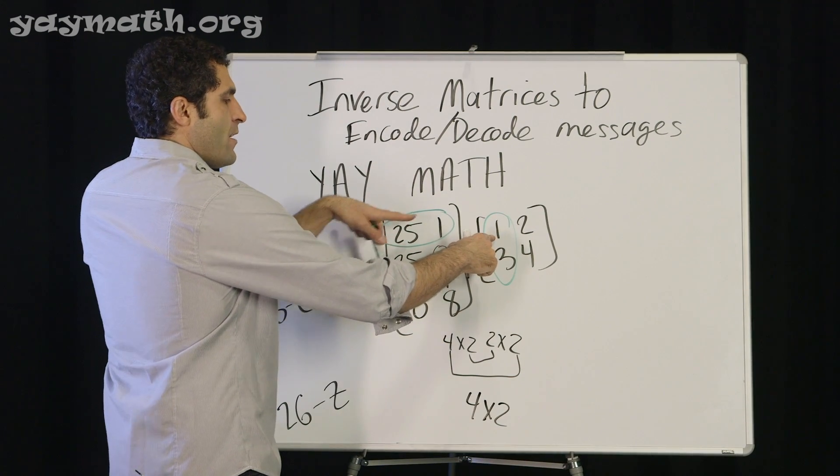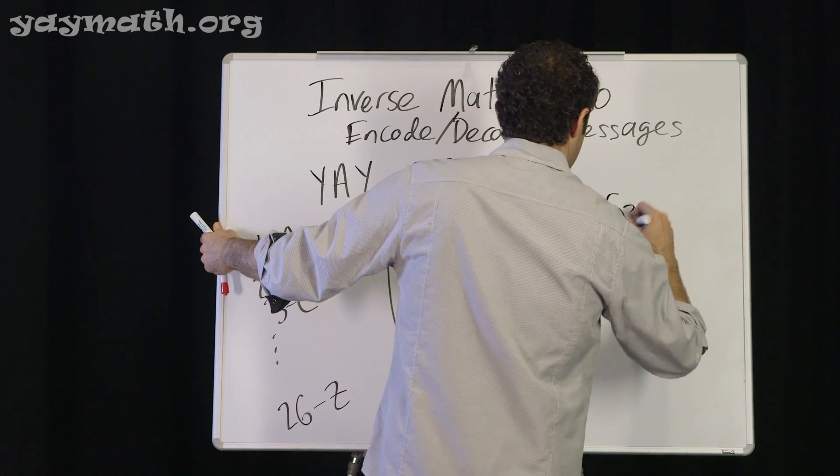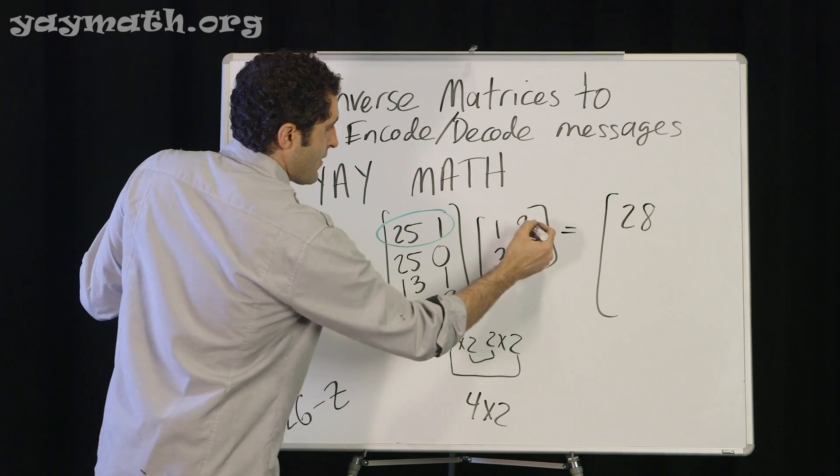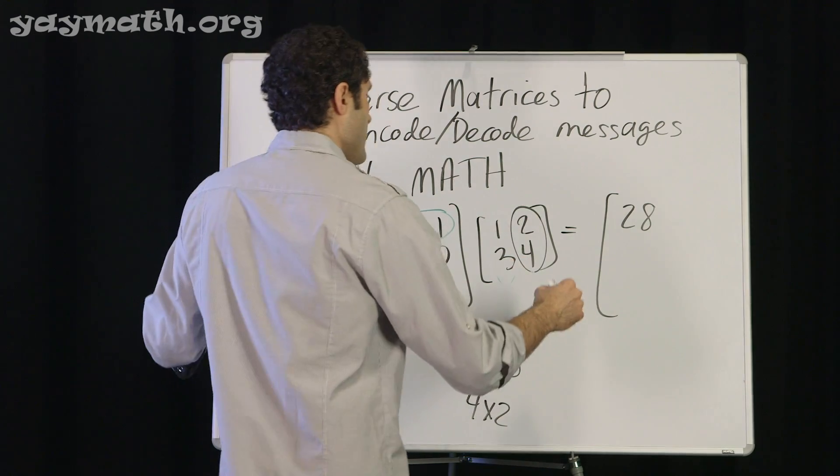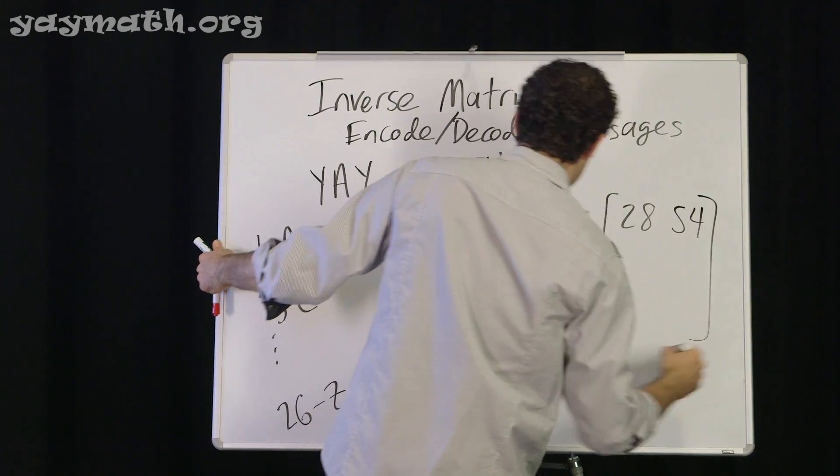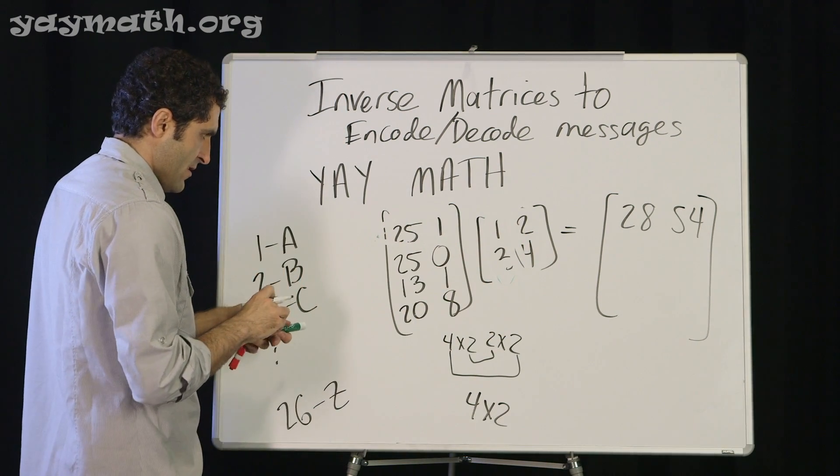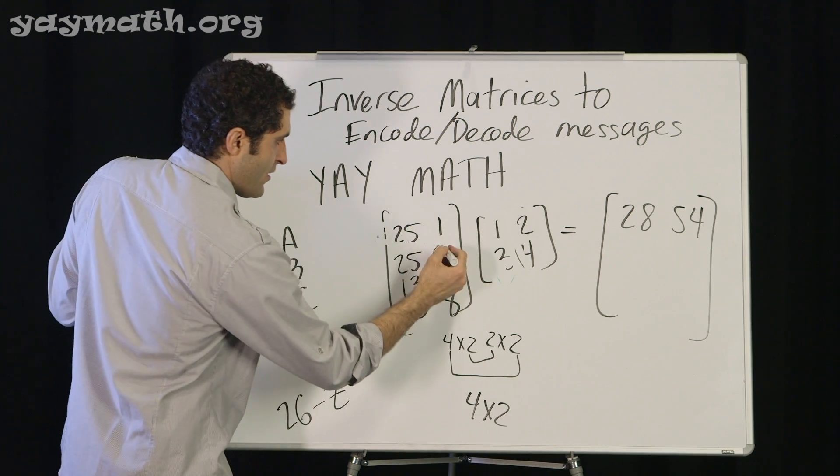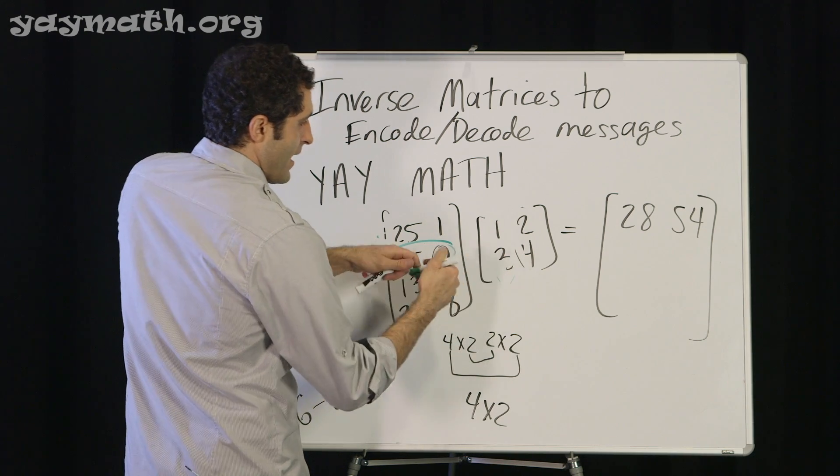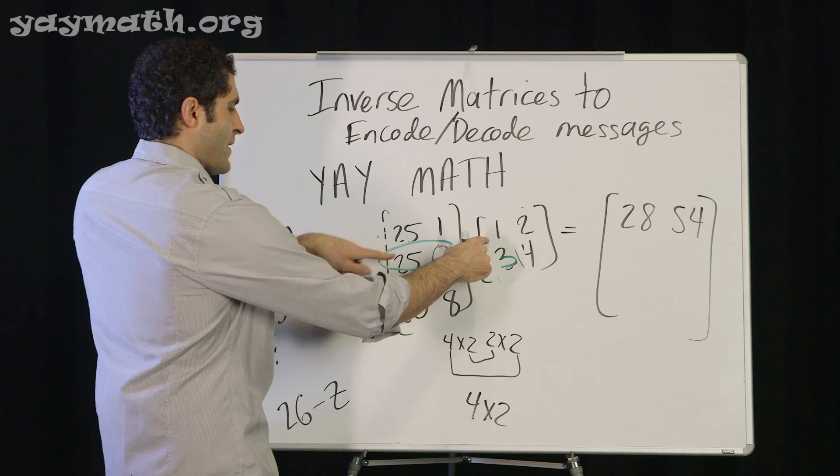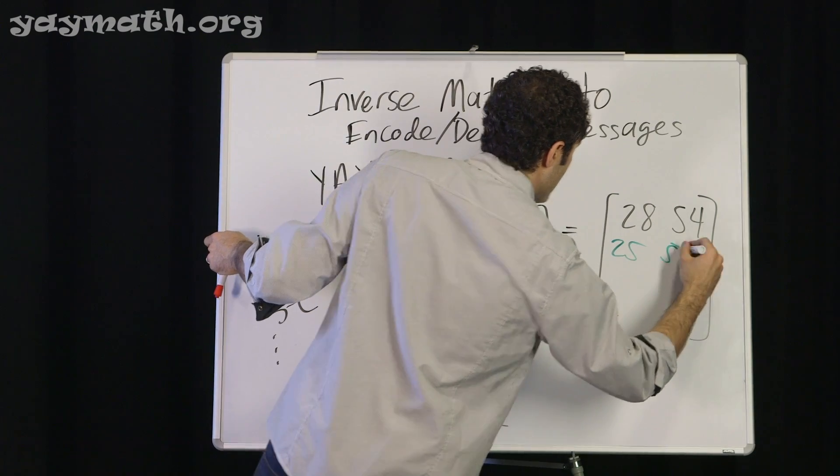25 times 1 plus 1 times 3. That's 25 plus 3 is 28. Moving along. 25 times 2 is 50 plus 4 is 54. I'll circle just the row at this point. I think you're a pro, you can follow along with me. So we've got 25 times 1 plus 0 times 3. 25 times 1 plus 0, that's 25. 25 times 2 is 50, plus 0, that's 50.